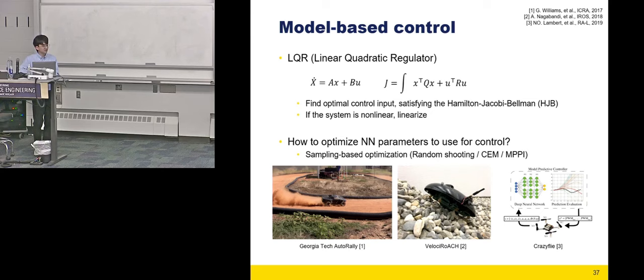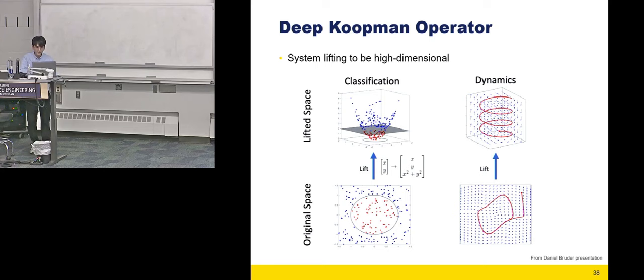Instead, optimization based on sampling is done for neural network models. Researches have been conducted on control using model predictive control based on sampling. It has been applied to many robotic systems like autonomous car or drones or other robots. Sampling based optimization starts with basic techniques such as random shooting, and it can be advanced like CEM or MPPI. There is another way to control using the neural networks. Even with neural network models, there is a way to utilize linear control techniques, namely through the Koopman operator.